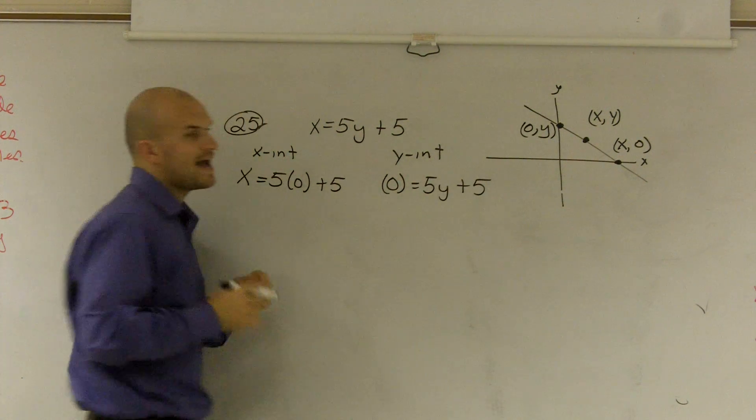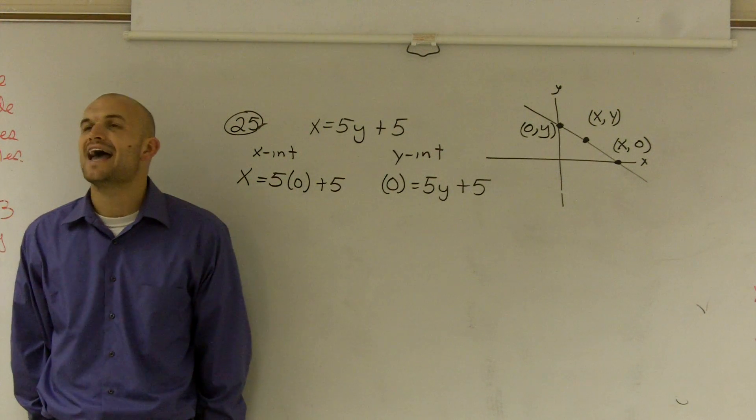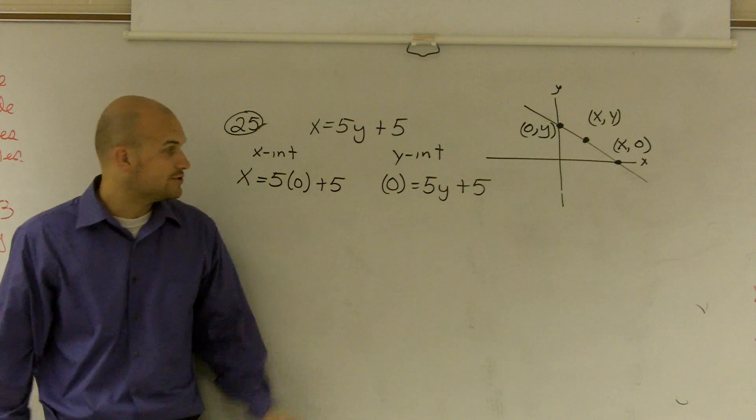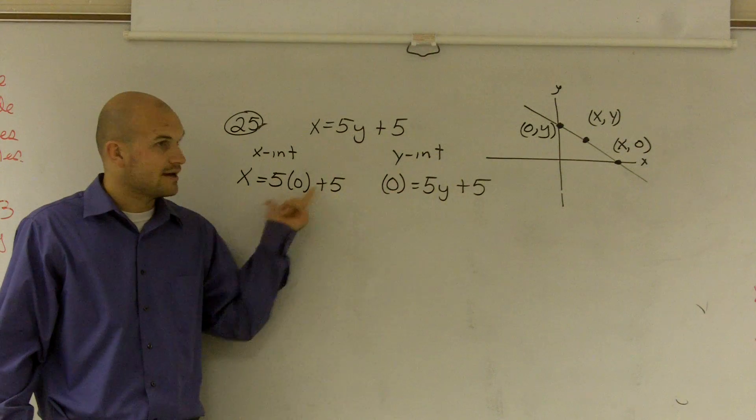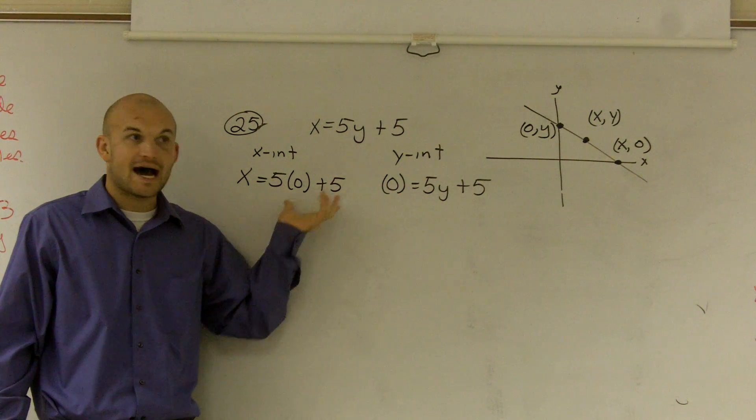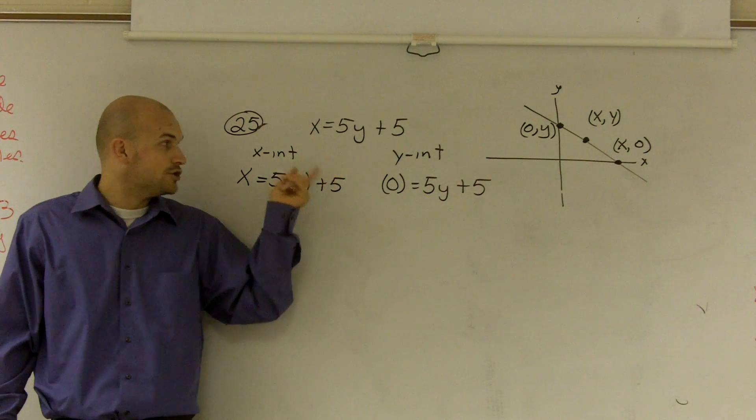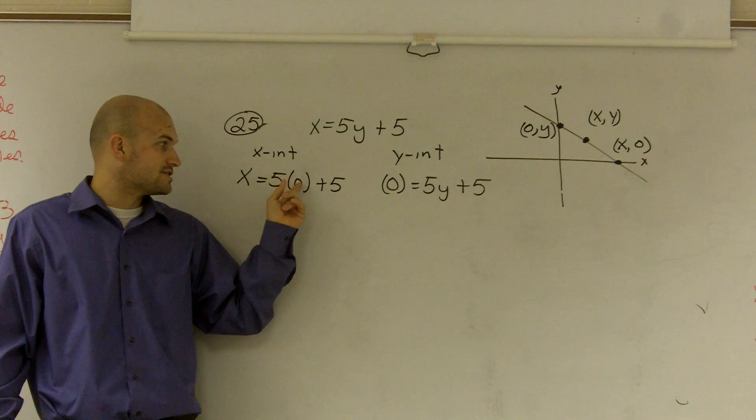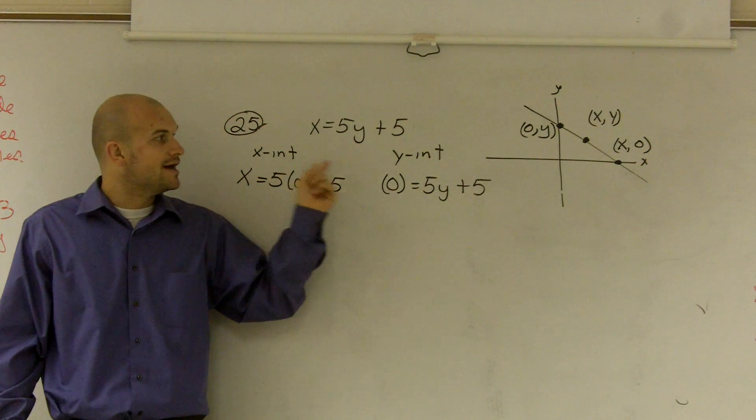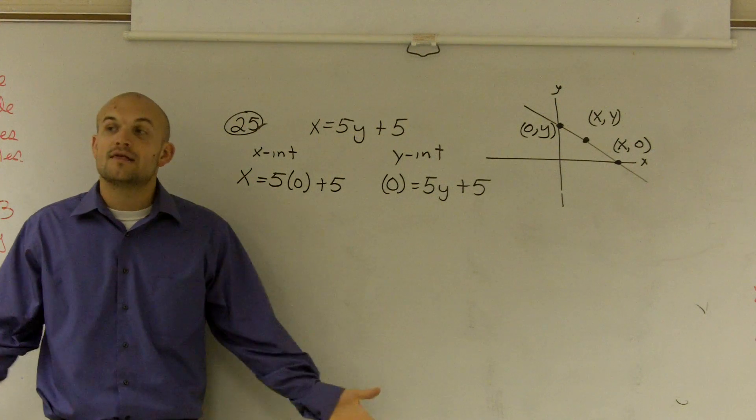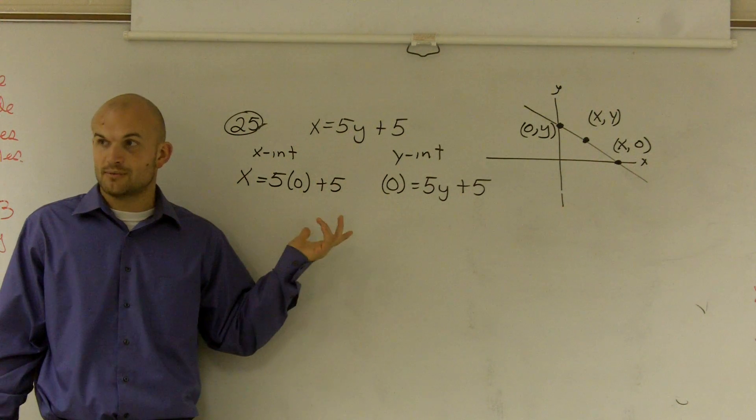I should see this for every single person's problem that they're doing. Every single one. Do you guys see how it's written up there? I should see that for every single problem. You put a zero in for the x or a zero for the y for an x-intercept, and you put a zero for the x for the y-intercept. Then you solve for your variable.